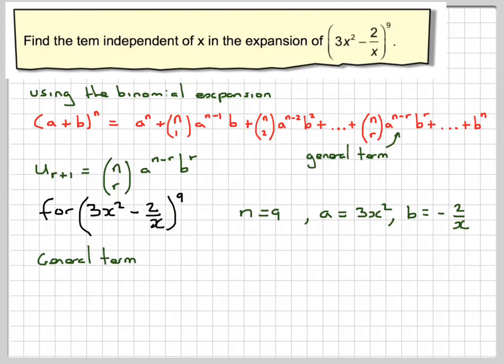Putting these numbers into the general term, we're going to get 9cr, 3x squared for a 9 minus r, and times minus 2 over x to the r.